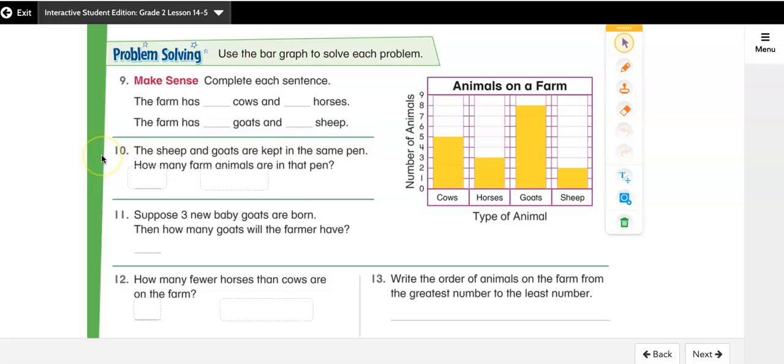So number 10 says the sheep and goats are kept in the same pen. How many farm animals are in that pen? So to solve this, I need to figure out first how many sheep there are and how many goats. So I'm going to go over to my graph and I see sheep. I'm going to go up to the top of the bar and across. See that there are two sheep.